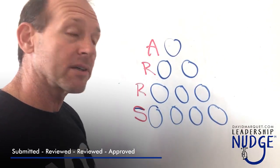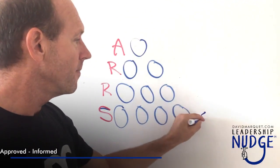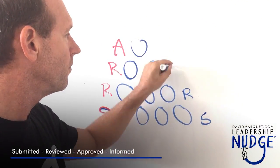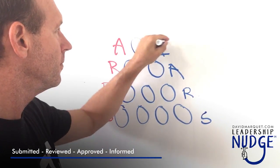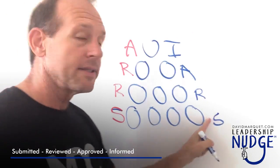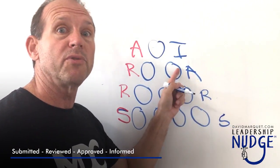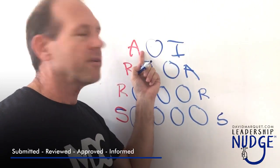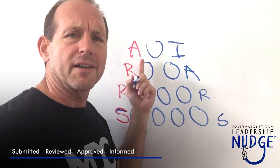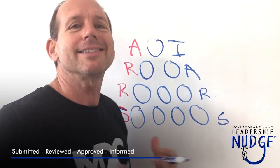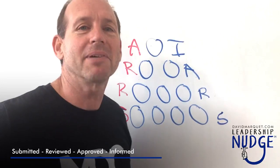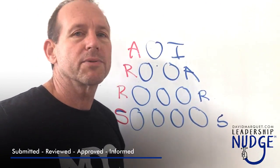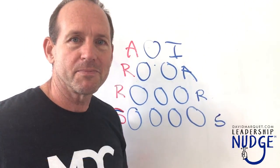So in other words, now it looks like this: submitted, reviewed, approved, informed. So the final authority — the former final authority — still sees what's happening, but the final approval rests with the next lower level.